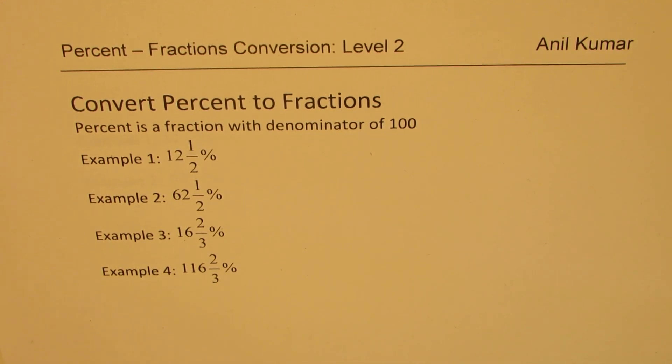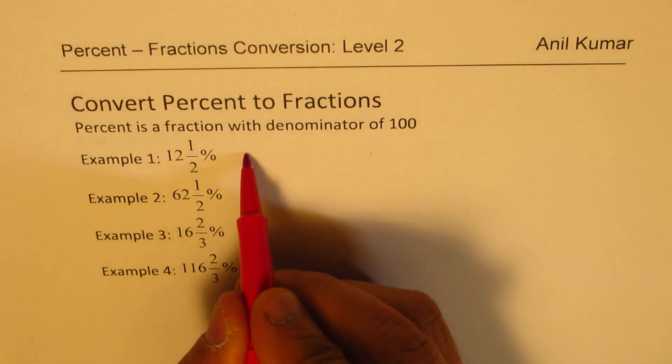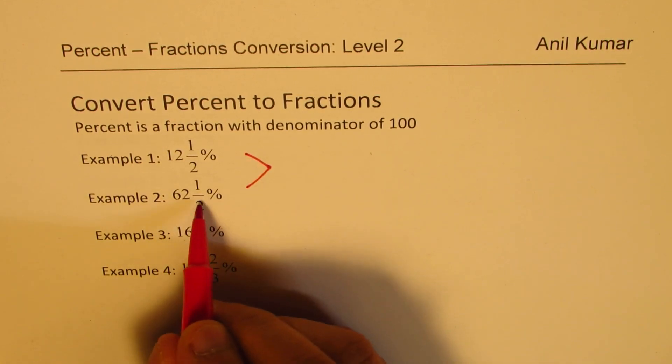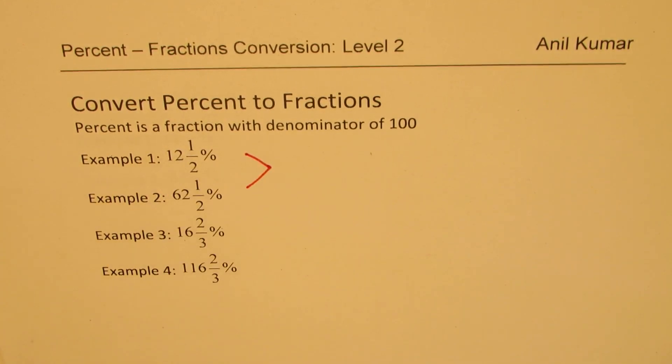You will also note that when I have written these numbers they are kind of related. These two are related in the sense that 62 and a half is what times 12 and a half? You can figure this out. So we can see directly there is a relation.